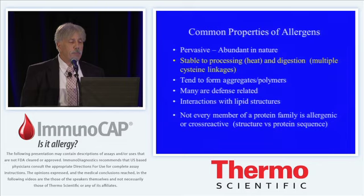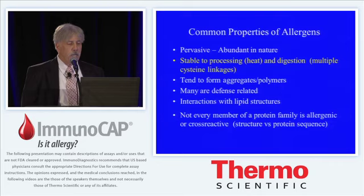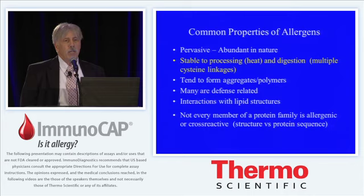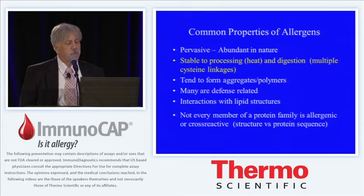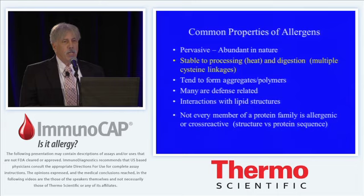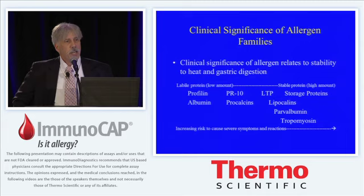They all share some basic common properties. As Rob Albertson from the Netherlands has shown us, most any protein can be an allergen, but all proteins are not allergens because either they're not pervasive or abundant in nature, or they're not stable to processing or digestion. Most allergens tend to aggregate or form polymers, so they are very good at cross-linking molecules and surfaces of cells like mast cells and basophils. In terms of biological functions, they share either defense or transport, such as lipid transport or calcium transport. Not every member of the protein family is allergenic or cross-reactive.